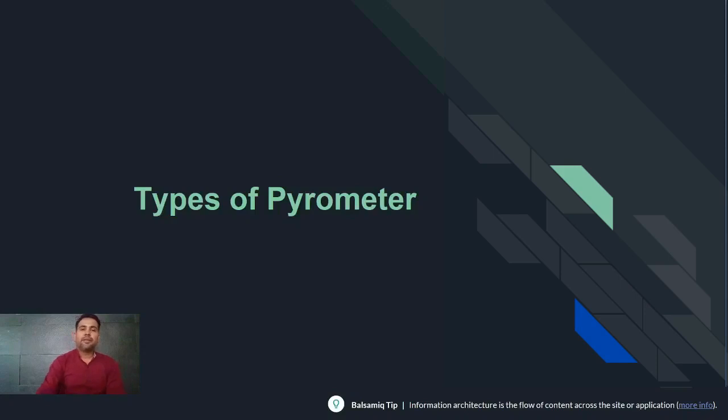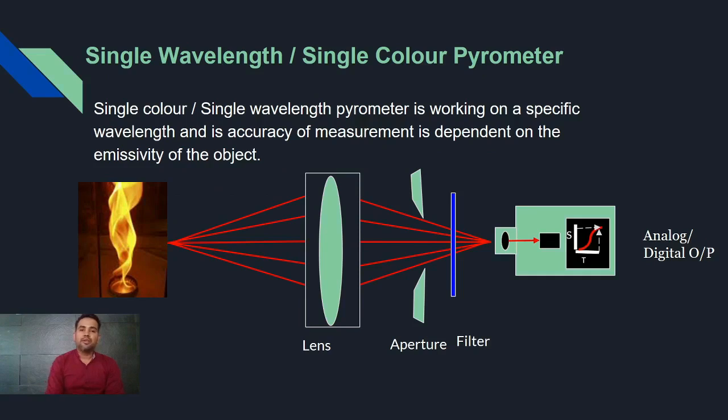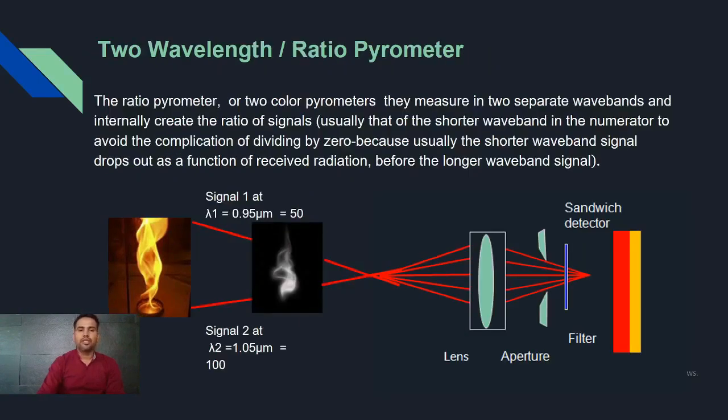Types of pyrometer. There are multiple pyrometers available in the market, such as single color pyrometer also known as single wavelength, two color pyrometer also known as ratio pyrometer, and multiple wavelength pyrometer. A single color pyrometer will work on a specific wavelength and its accuracy of measurement is completely dependent upon the emissivity of the object. Two color pyrometer is having two different wavelengths and it captures the different temperature and in the result it will show the ratio of the temperature. And it is completely non-affected by dust, fumes and any disturbance.